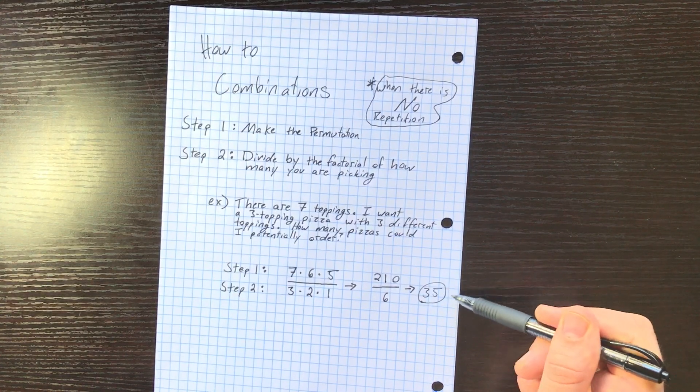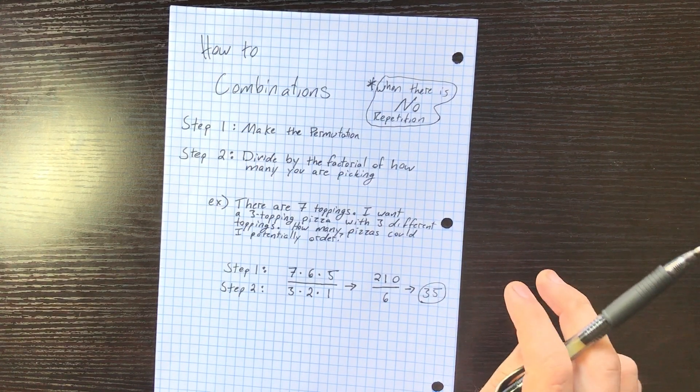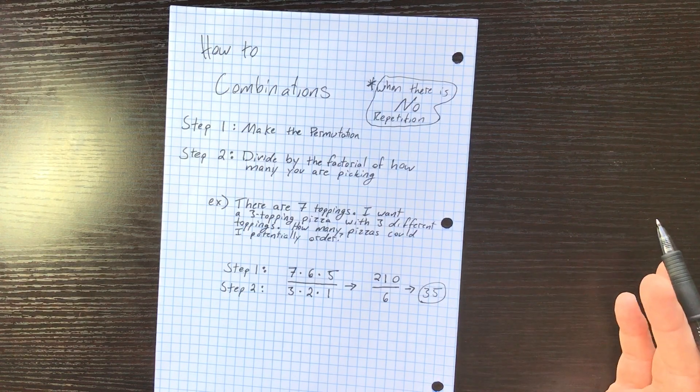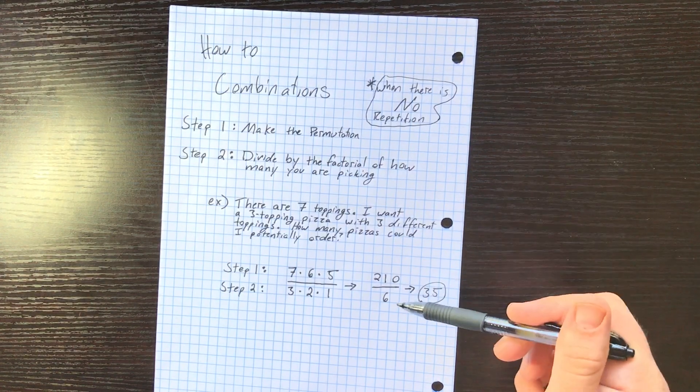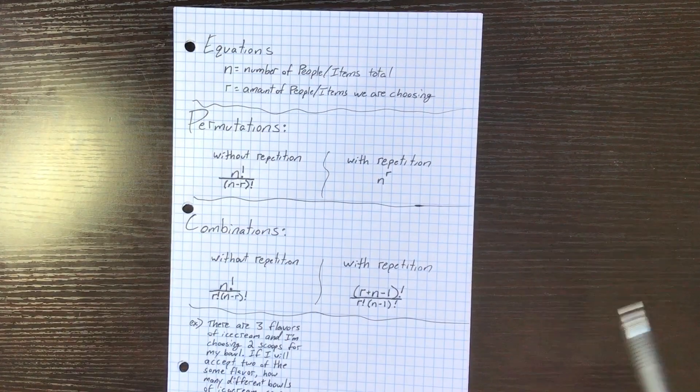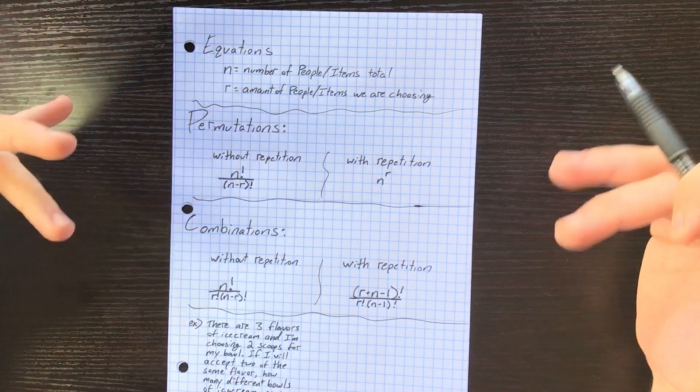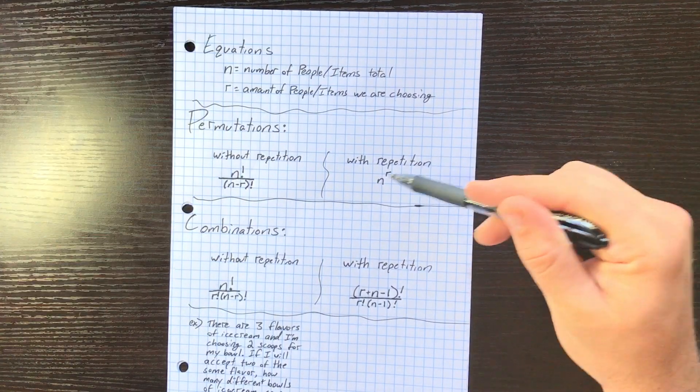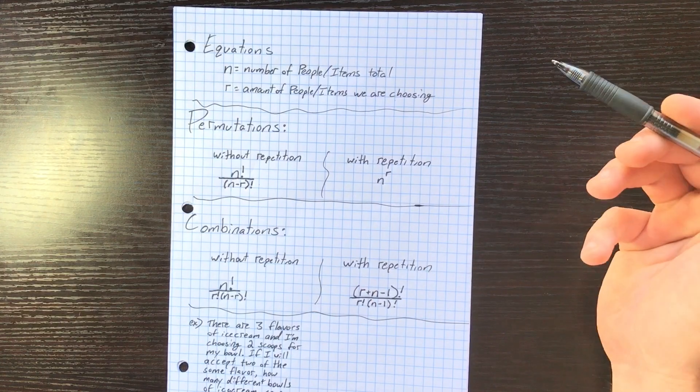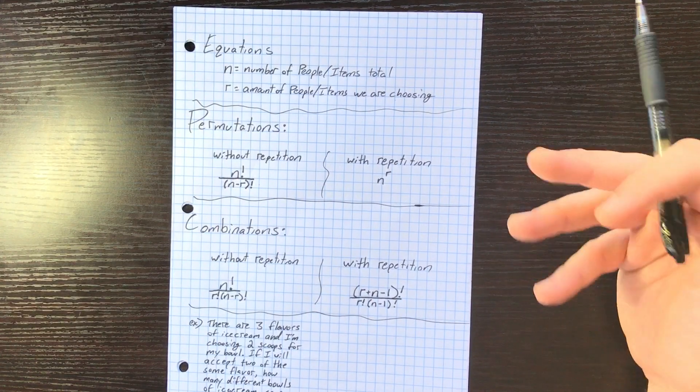So we have 210 divided by 6. There are 35 different three topping pizzas you could potentially order from the spot. So this is how combinations work. This page is just extra, just in case if you're this type of brain. Do you have to memorize these formulas? No.